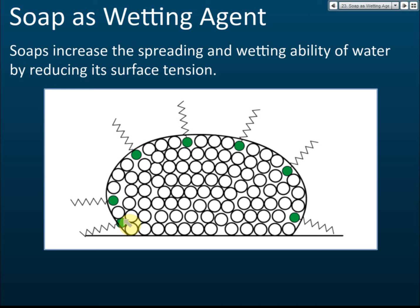In this case, we say soap acts as a wetting agent. Soap reduces the surface tension and hence acts as a wetting agent, causing the water to wet the surface of an object more easily compared to pure water. That is how soap acts as a wetting agent.